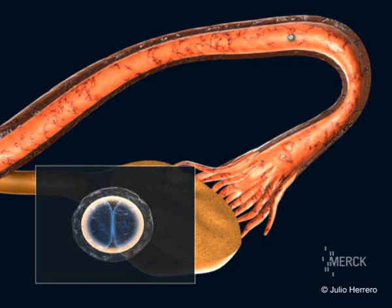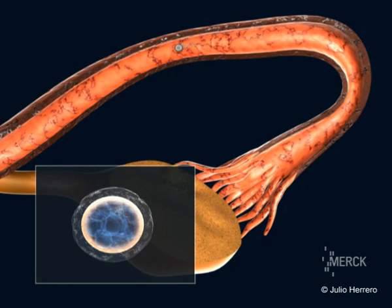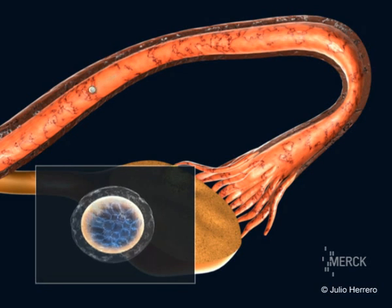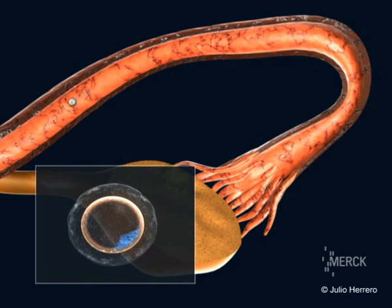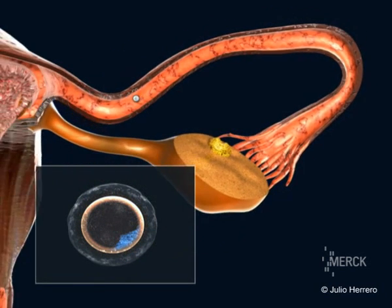Two days after fertilization, the embryo is made up of two to four cells and moves along the tube in the direction of the uterus. At the end of four days, the embryo continues to divide itself, at which point it is called the morula. The interior of the embryo then has an area filled with liquid, and this is called the blastocyst.